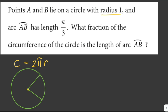If this is our circle, this is the center of the circle, and this is the radius which is equal to 1, and these are points A and B. So this is arc AB, which corresponds to our central angle. Now let's solve for the fraction of the length of arc AB to the circumference of the circle.